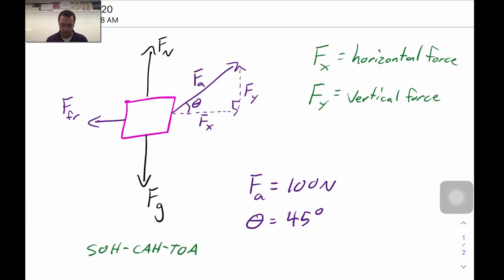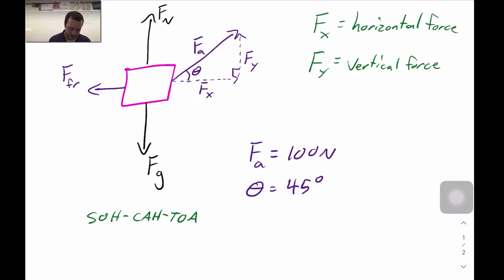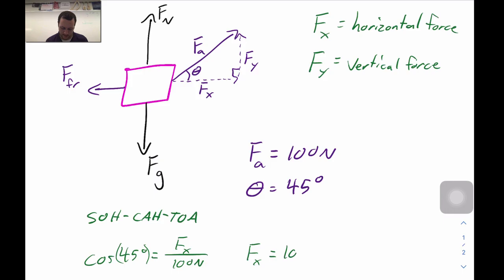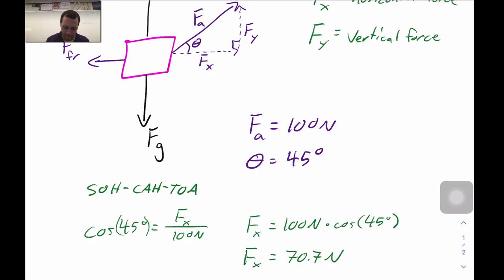For the horizontal component, that would be the adjacent side, and we know the hypotenuse is 100 newtons. Since we know the adjacent side and the hypotenuse, we use cosine. The cosine of 45 degrees equals Fx divided by 100 newtons, so Fx equals 100 newtons times the cosine of 45 degrees. The horizontal force Fx comes out to be 70.7 newtons (3 sig figs).